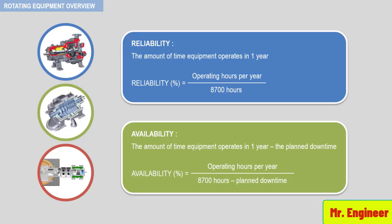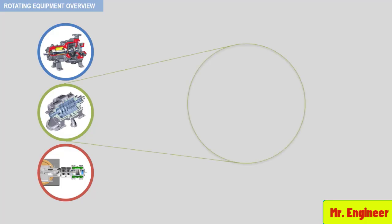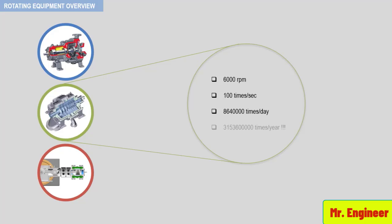To better illustrate this and put things into perspective, let's take a look at the following figures, which represent typical facts concerning a centrifugal compressor. A typical centrifugal compressor running at 6,000 RPM rotates at 100 times per second and 8,640,000 times per day. The revolutions per year are quite impressive — and all this is done on an oil film of less than 1/1000 of an inch.